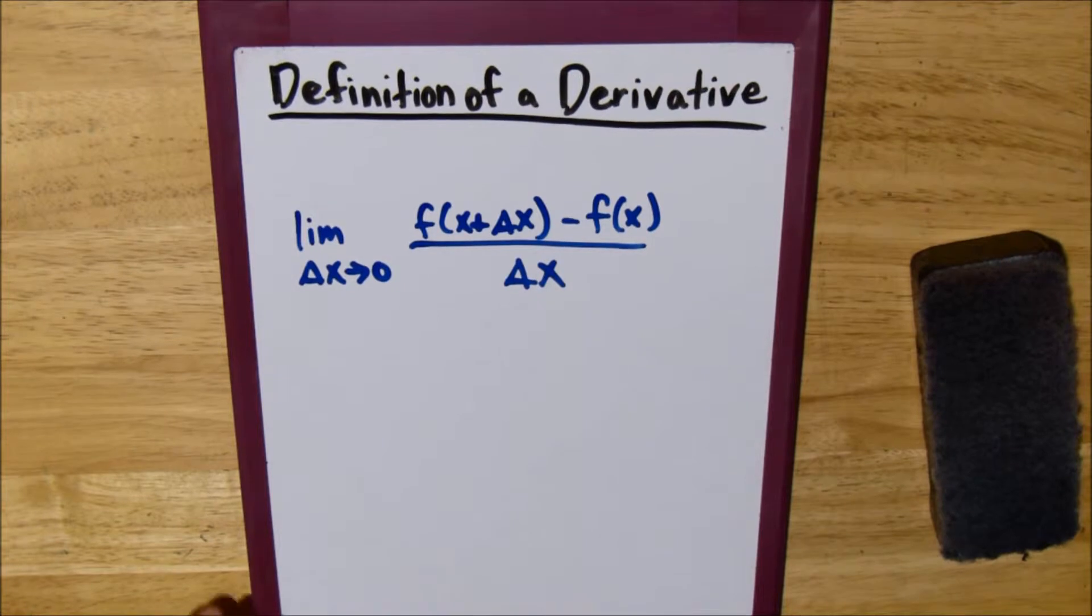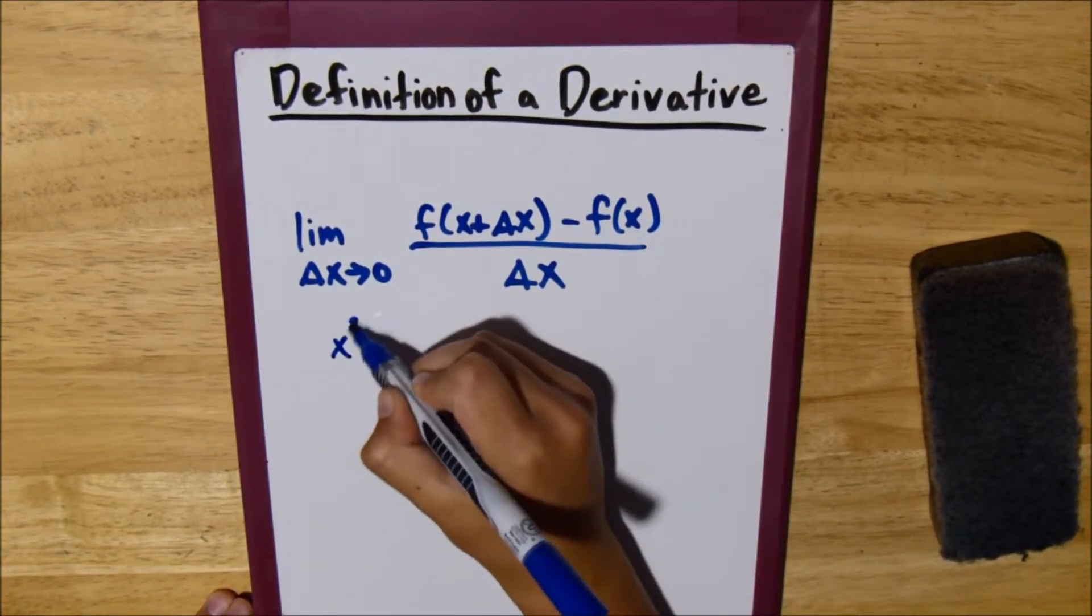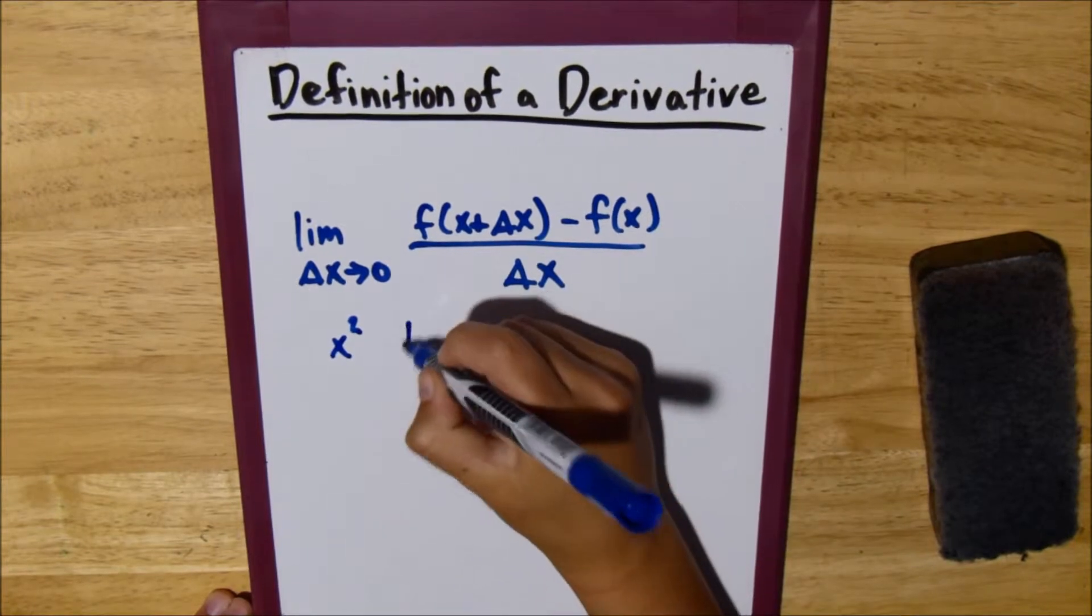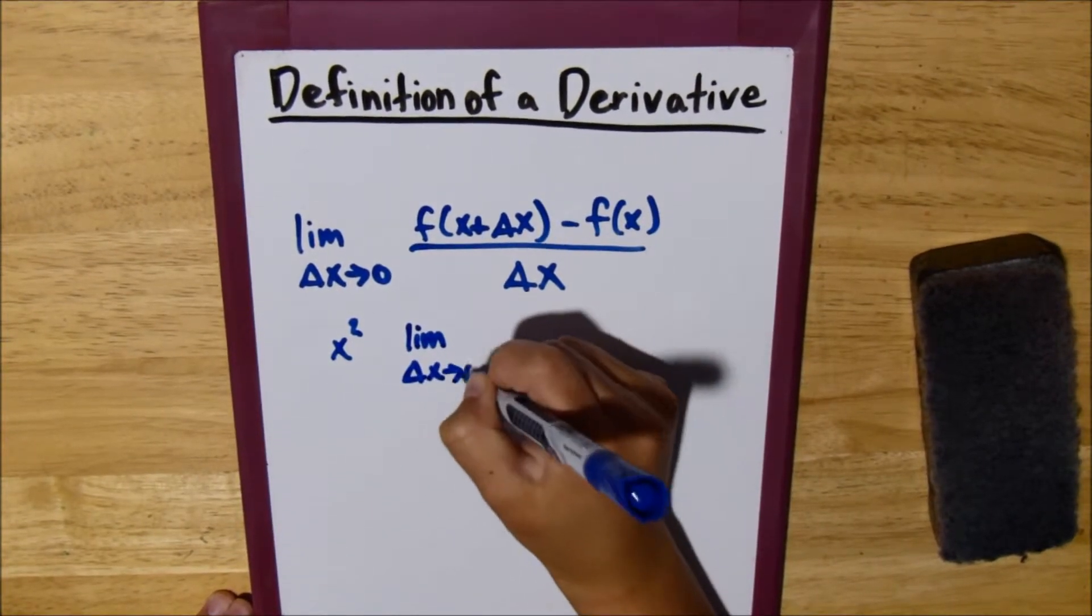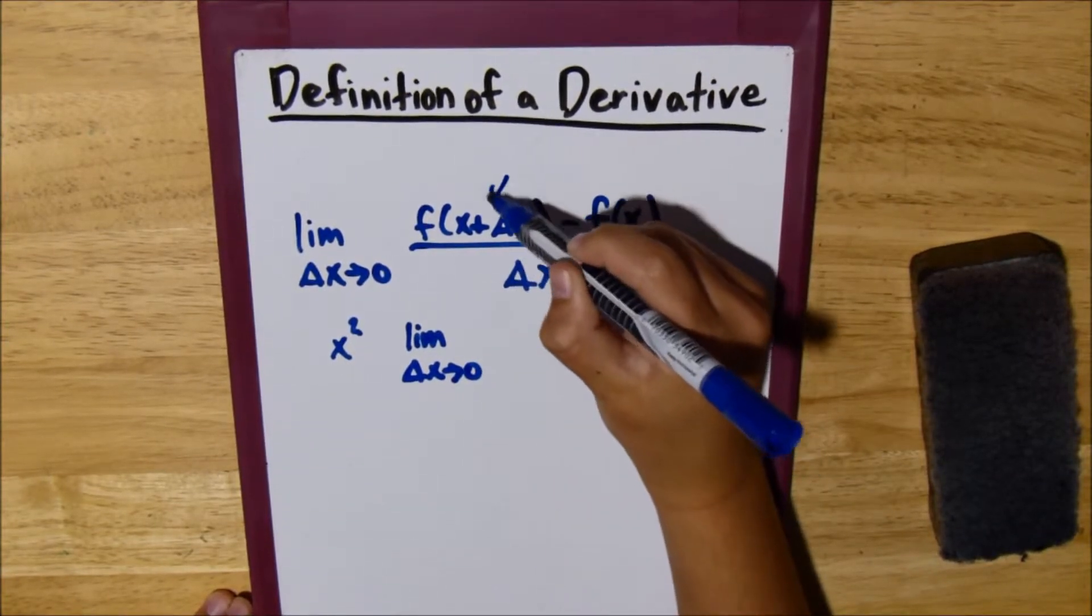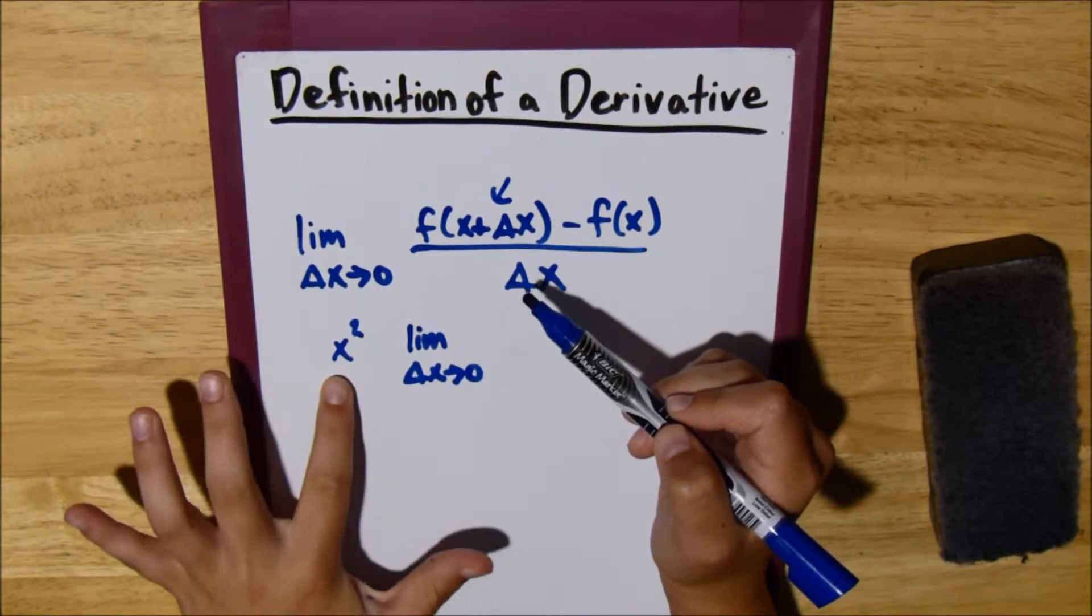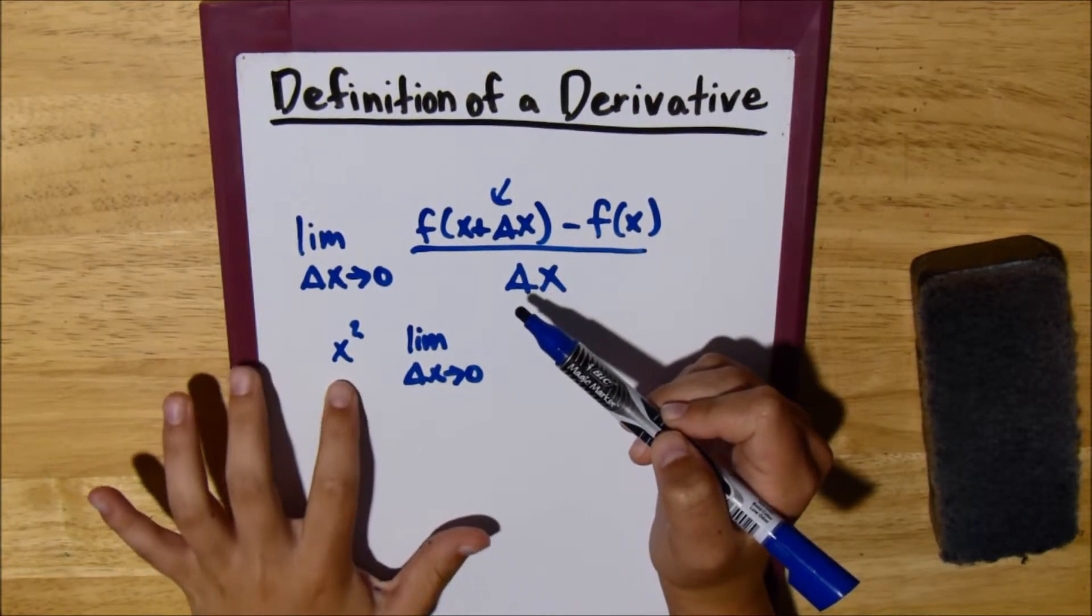So let's try this. Let's say that our function is x squared, let's start with something easy. So, rewrite our limit, limit as delta x approaches 0, and now with this, you basically just take the stuff inside of these parentheses, and you replace x with that.